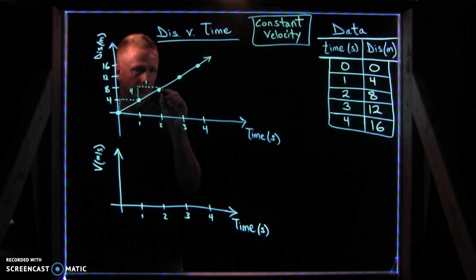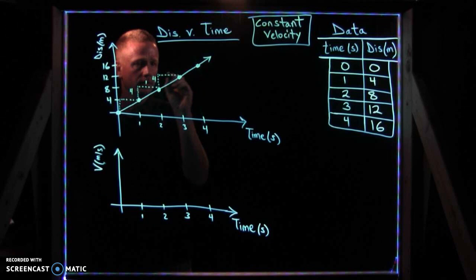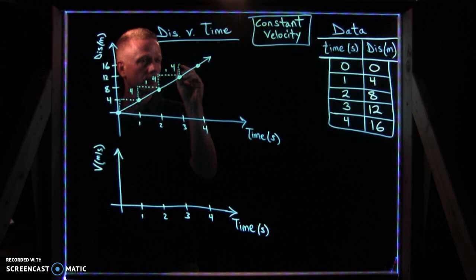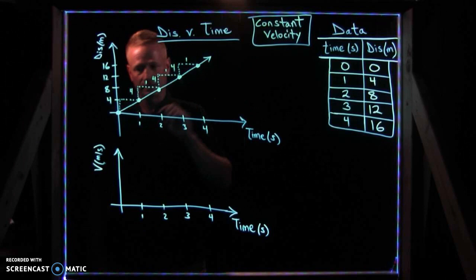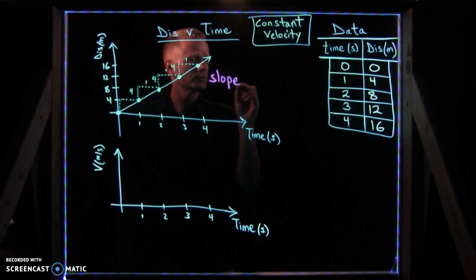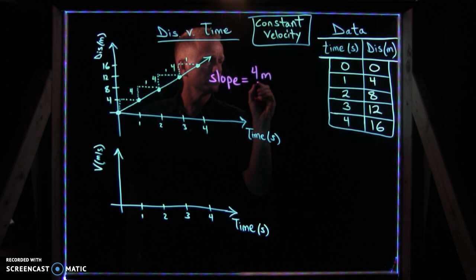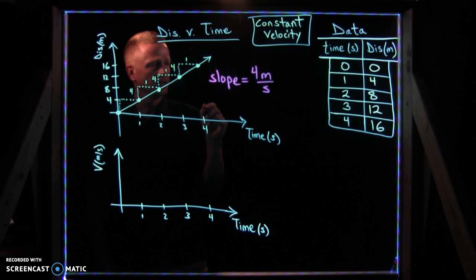The next intervals show the same pattern: rise four meters, run one second, repeatedly. The slope between any two points on this line is constant. So you can see the slope is four meters of rise per one second of run, in other words, four meters per second.